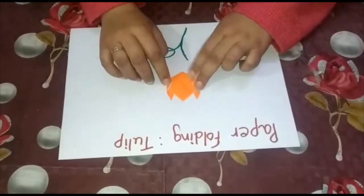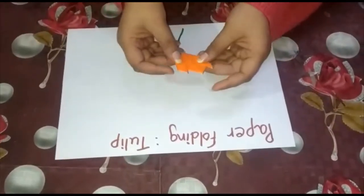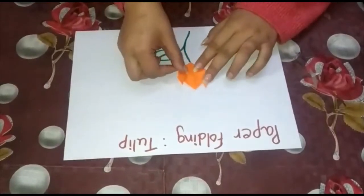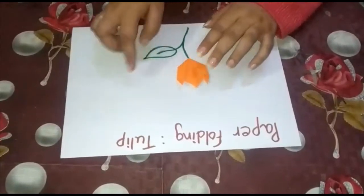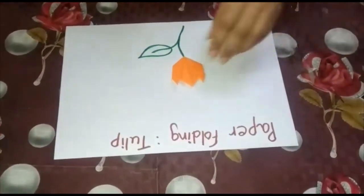Now paste it like this. This is the final piece. Paste it here. I have already drawn the stem and the leaves, so you can make as many flowers and paste them. You can make a bouquet.